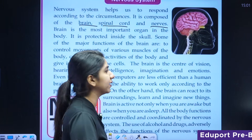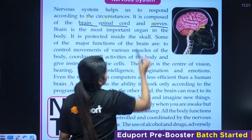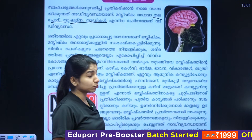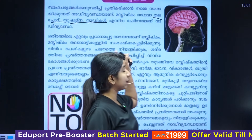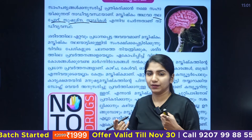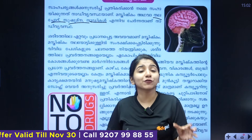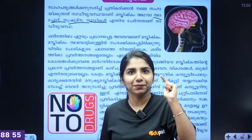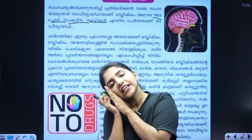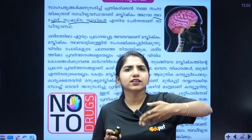We need the circulatory system and we also have the nervous system. The three components of the nervous system are the brain, spinal cord, and nerves. The brain is the main thing - humans use the brain like a computer.